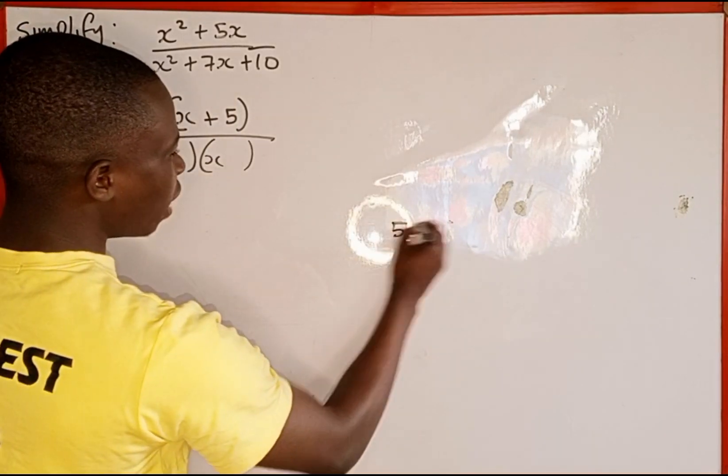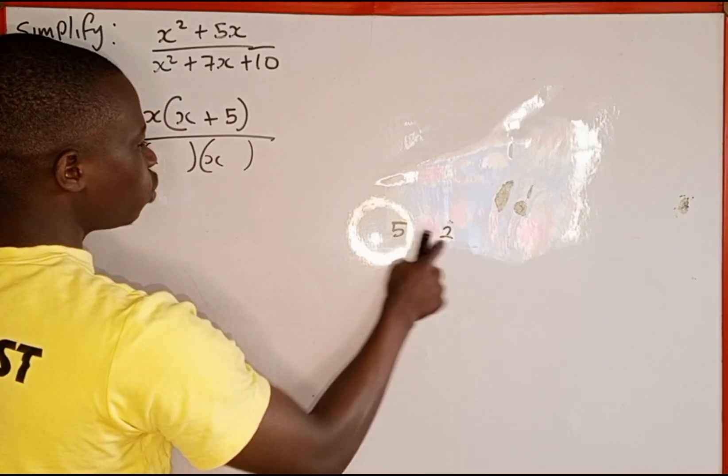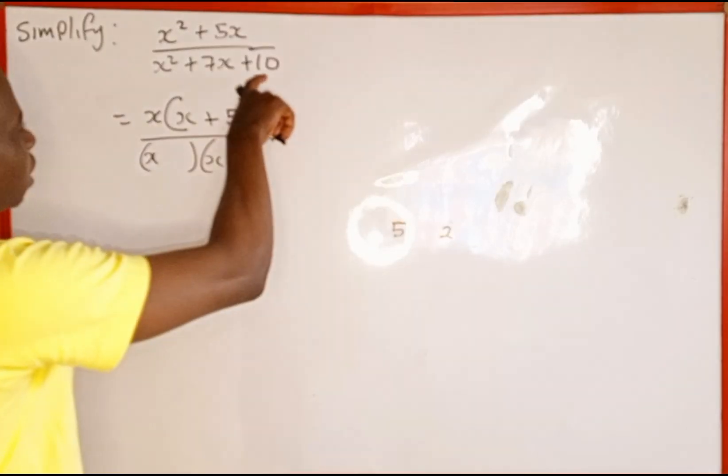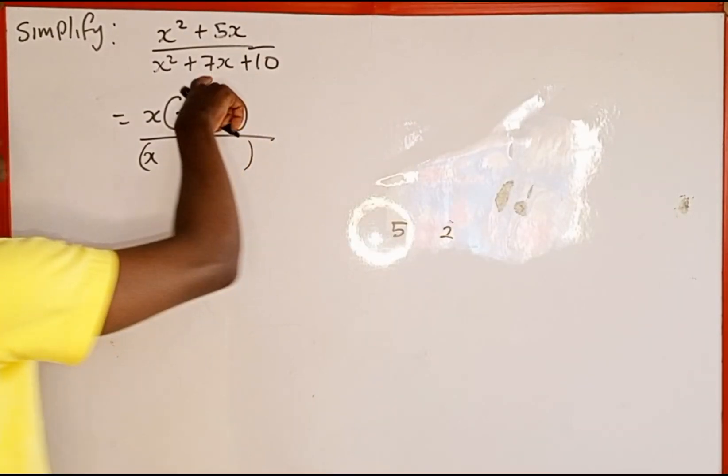And the numbers are going to be 5 and 2. Because 5 multiplied by 2 is going to give us 10. Then 5 plus 2 is going to give us 7.